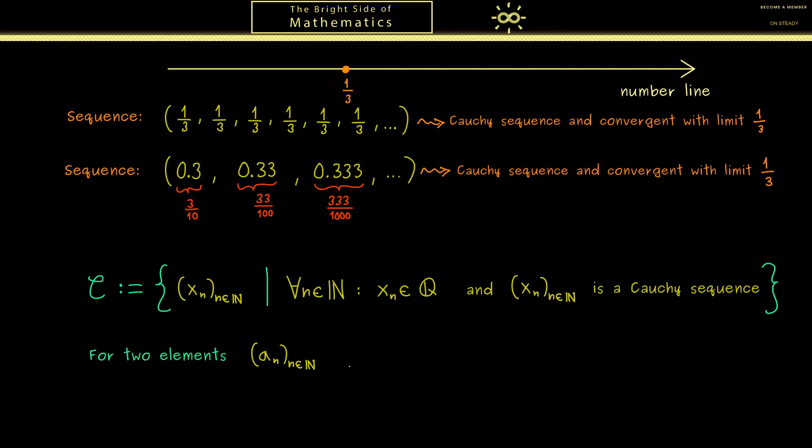Now for two elements from the set, let's call them (aₙ) and (bₙ), so for two Cauchy sequences, we define an equivalence relation. At this point, we want that these two sequences here are equivalent, but we don't want to use the explicit limit. Therefore, the question is, how can we do that in a simple way?